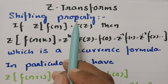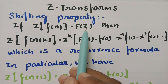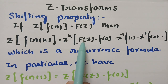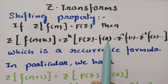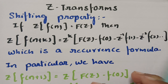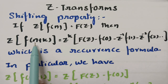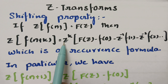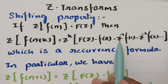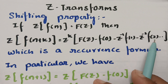Shifting towards the left side. See the property here: if Z transform of f(n) is equal to capital F(z), then Z transform of f(n+k) is equal to z^k into F(z) minus f(0) minus z^(-1) into f(1) minus z^(-2) into f(2) and so on. This is the recurrence formula — it is shifted towards the left side for k units.